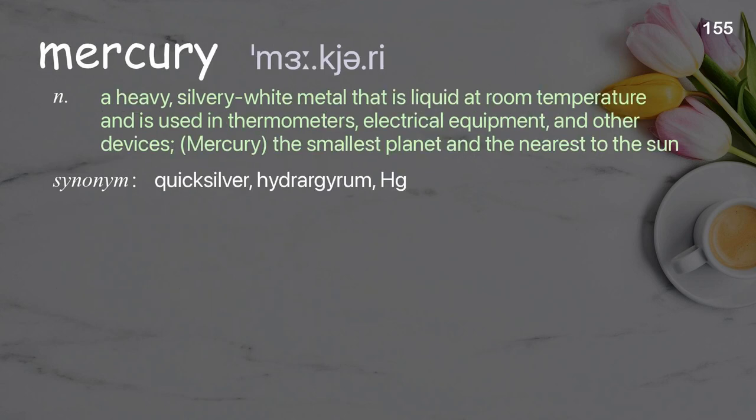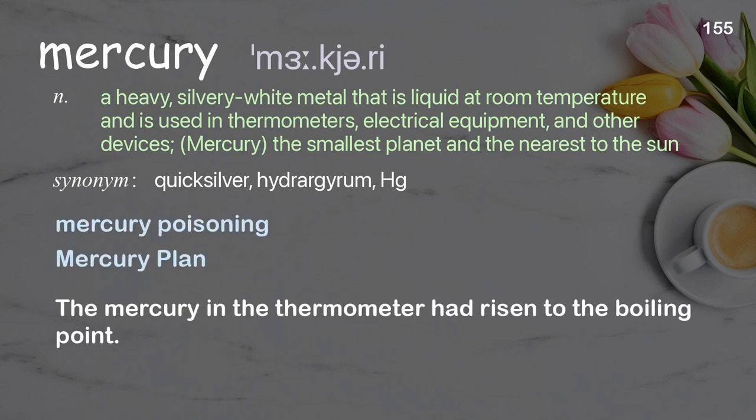Mercury: a heavy, silvery white metal that is liquid at room temperature and is used in thermometers, electrical equipment, and other devices; also Mercury, the smallest planet and the nearest to the sun. Examples: mercury poisoning, mercury plan. The mercury in the thermometer had risen to the boiling point.